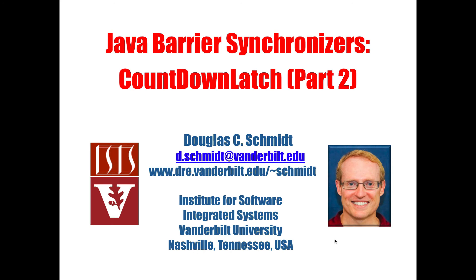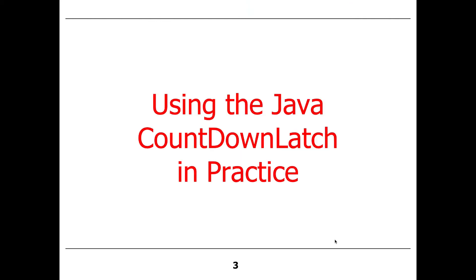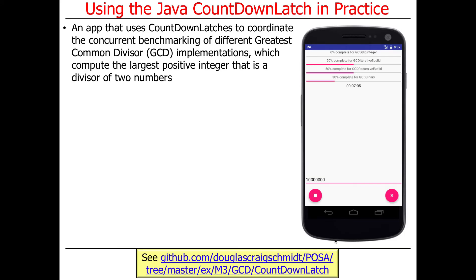Now that you know about what CountDownLatch does in terms of its API — which is ridiculously simple: await and countdown, plus a constructor to give it a count — let's talk about how you could actually program with it in practice. This will give us a chance to look at a real fun example, and as with all the examples, you can find them in my GitHub account.